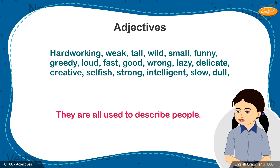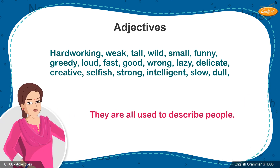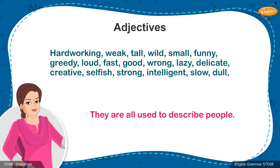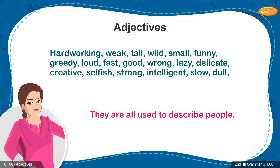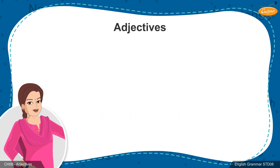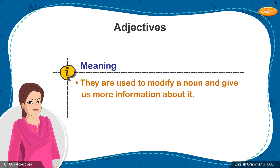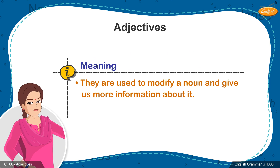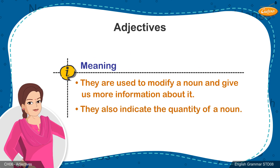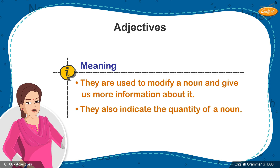Teacher, they are all used to describe people. Correct. And these words are called adjectives. So today, we shall learn about adjectives. Adjectives are used to modify a noun and give us more information about it. Adjectives are also those words that indicate the quantity of a noun. Let us learn about them in more detail.